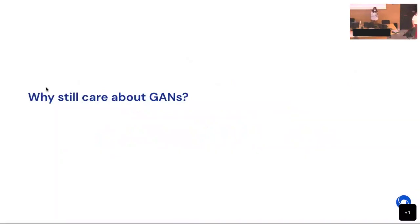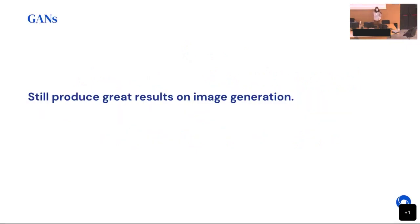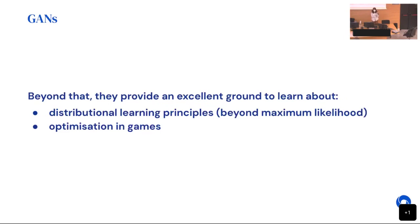The first question to ask is why would we still care about GANs? That's a pretty reasonable question, given that these days diffusion models are producing really great results, and VAEs are also catching up in terms of image generation performance. I'd like to give a twofold answer. First, GANs still produce great results on image generation. And secondly, they provide an excellent testing ground to learn about distributional learning principles beyond maximum likelihood, and about optimization in two-player games.